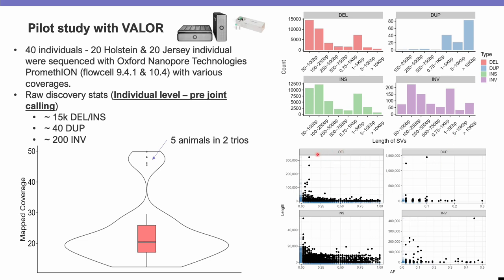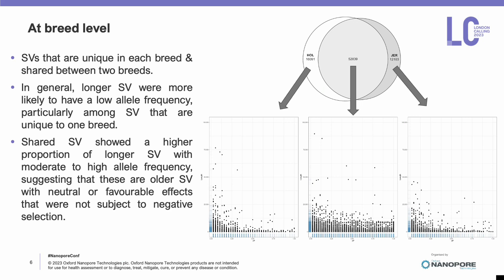We also plotted the length of structural variants against allele frequency. What we found is that longer structural variants tend to be very rare in the discovery cohort. At the breed level, we identified structural variants unique to each breed as well as those shared between the two breeds. Longer structural variants are more likely to have low allele frequency, particularly among those unique to one breed, perhaps because longer SVs are more harmful to the genome and therefore subject to negative selection.